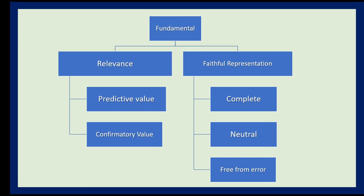An item is considered relevant if it has both predictive value and confirmatory value. Predictive value means the information allows us to predict what can happen in the future — for example, if sales have been growing 10% every year, we can predict future increases. Confirmatory value means the information confirms what happened in the past — for instance, if sales dropped during hard times, the financial report confirms that decline.